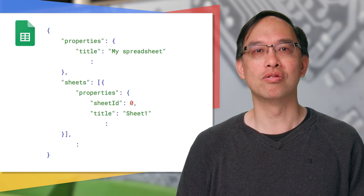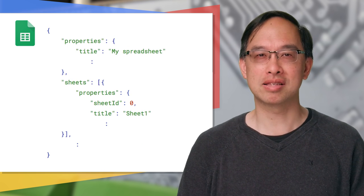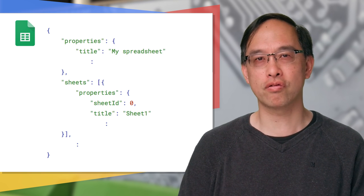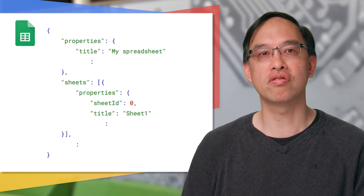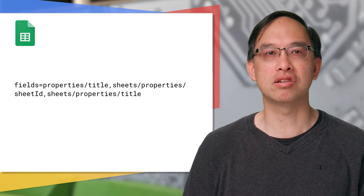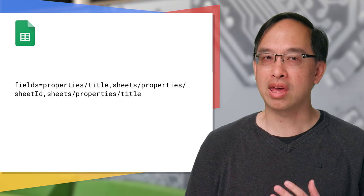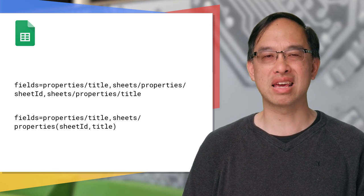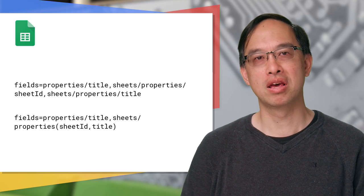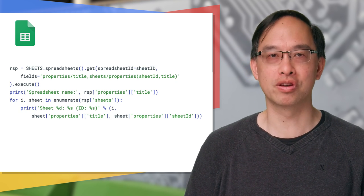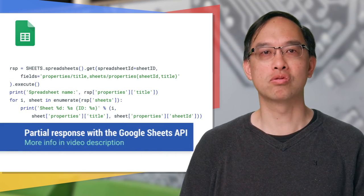For the last demo, we'll fetch a spreadsheet's name, plus the names and IDs of each of the individual sheets. This example is a bit more complex than the first pair, as the values are in different fields, as you can see from the get response. The full paths down to each field are too long. We can do some parenthetical grouping, but in the end you're going to have a mix and can't really get it shorter than this. Here's the corresponding Python snippet that does what we want with the help of field masks. There's also a partial response page in the Sheets API docs.